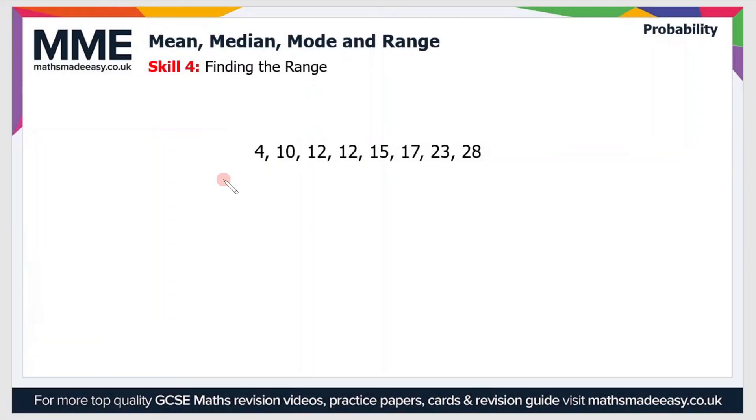So the final skill, then, is finding the range. The range is also quite straightforward. All you have to do is subtract the smallest value from the largest value. So in this case, you can see that the largest value is 28, and the smallest value is 4. So therefore, the range is 28 minus 4, which equals 24.